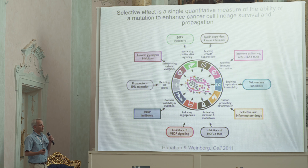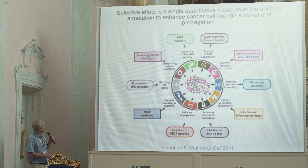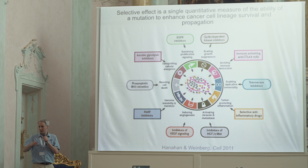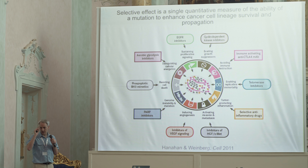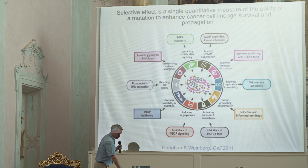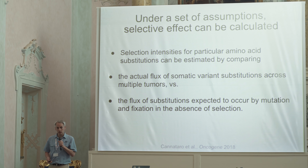If we can get a selection coefficient, what does it mean for a cancer mutation? Essentially it measures the degree to which a mutation affects all of the classic hallmarks of cancer — as Hanahan and Weinberg are famous for — with one exception: genome instability and mutation, which is the source of mutation itself, not a product of selection. So the selection coefficient is a composite of what a mutation does to the cancer lineage in terms of aiding its survival or reproduction.